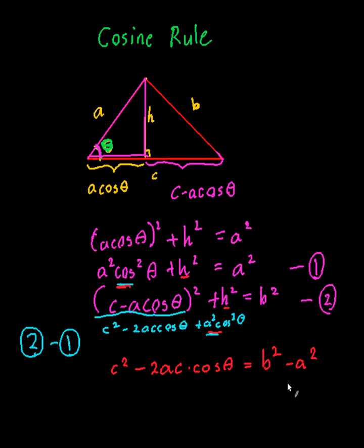The final thing I'm going to do is take this a² over to the other side. So the final answer is b² = a² + c² - 2ac cos θ.